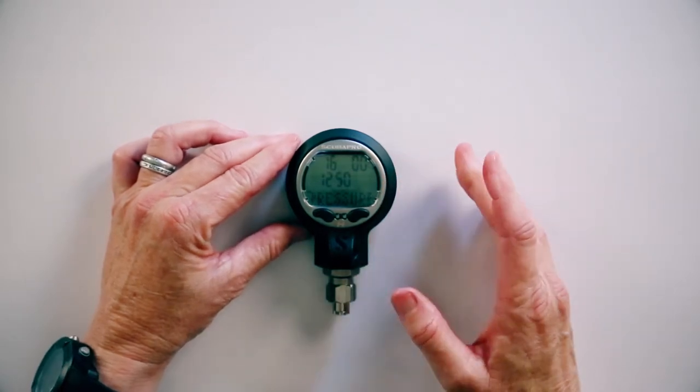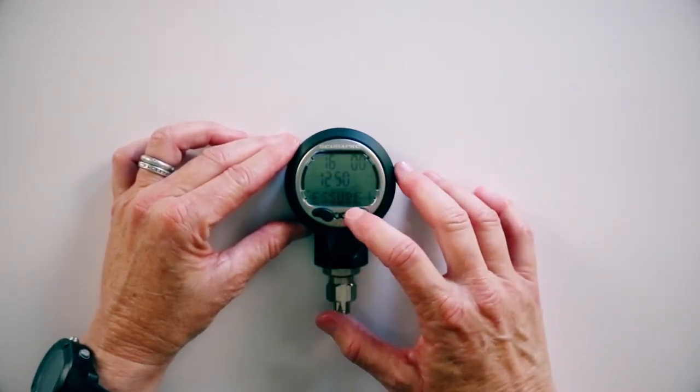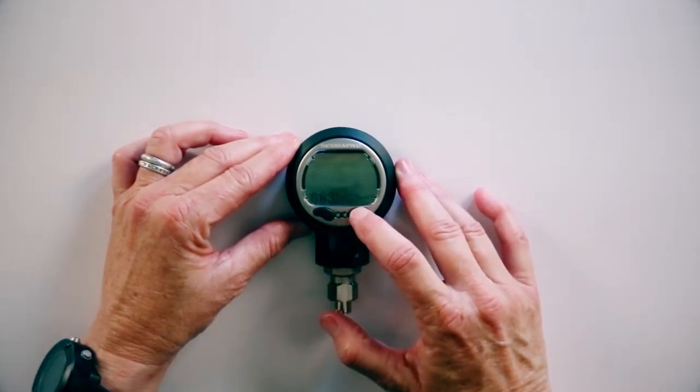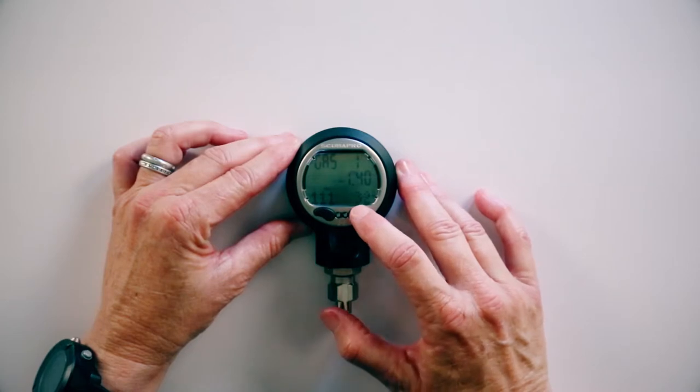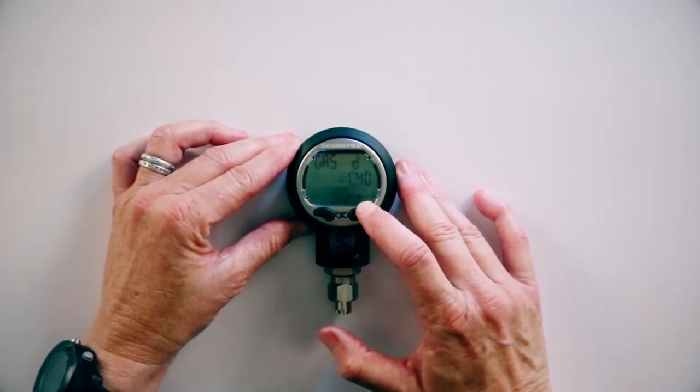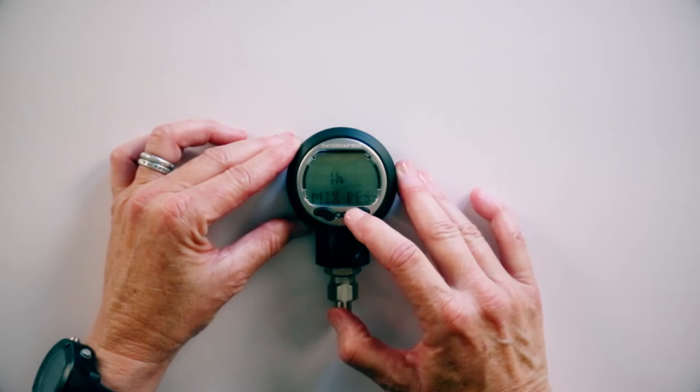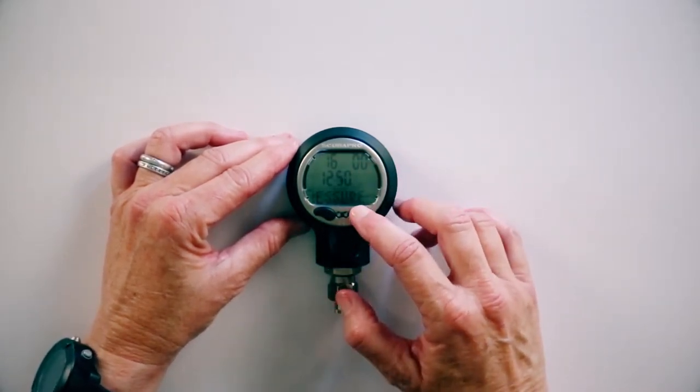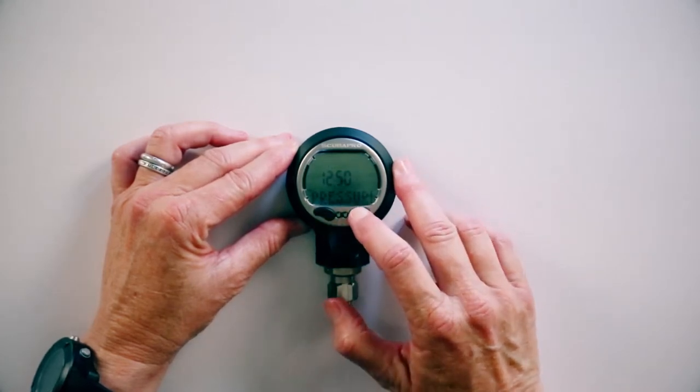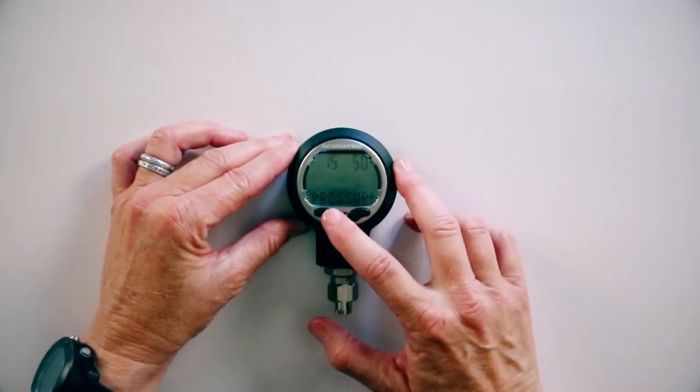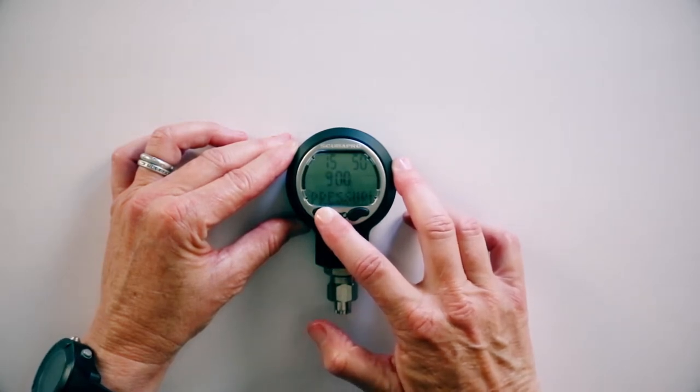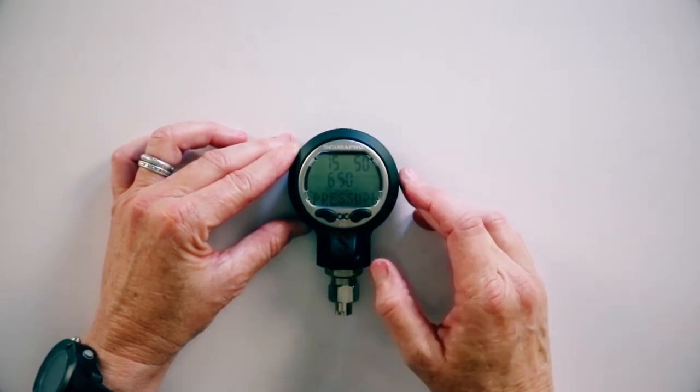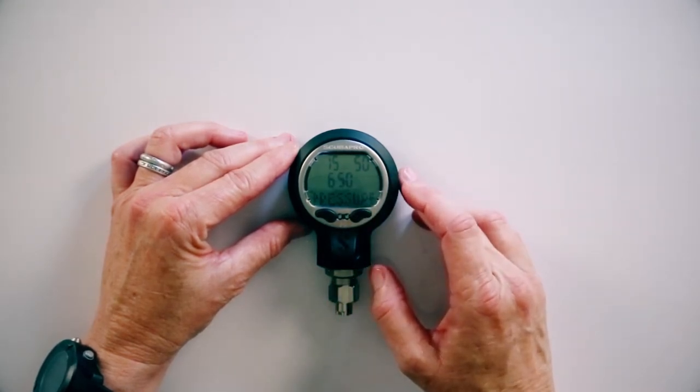Now we're going to go to pressure set. I'm going to go back into that. This will happen when you're first doing this. So I've got the reset. We've got a mid-tank warning. I'm going to set that for about 1,500. And my low pressure tank warning, I'm going to set down to 650. You can make that personalized for yourself.